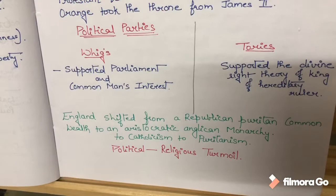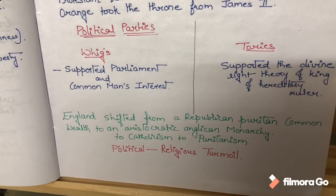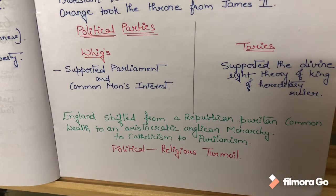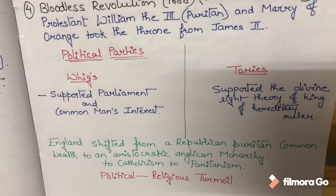If we talk about the political conditions, there were two strong political parties: the Whigs and the Tories. The Whigs were supported by Parliament, meaning the common man's interests were represented. The Tories supported the Divine Right Theory — that the king is the supreme power, that kings rule by heredity, and that God has given them the right to rule. At this time, many political pamphlets were written for both party supporters.